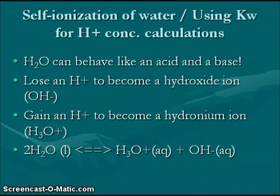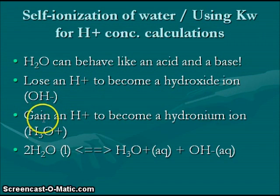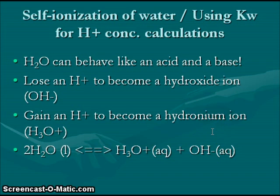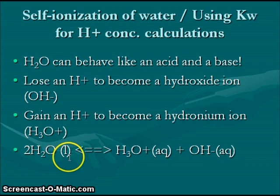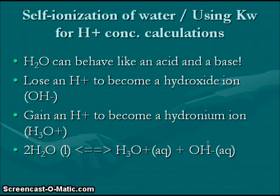The self-ionization of water means that water is capable of dissolving in itself, because water can behave as both an acid and a base. It can lose a hydrogen ion to become a hydroxide ion, or gain a hydrogen ion to become a hydronium ion — making water either a proton donor or a proton acceptor. For example, one water molecule can accept a proton from another to produce a hydronium ion and a hydroxide ion, OH⁻.